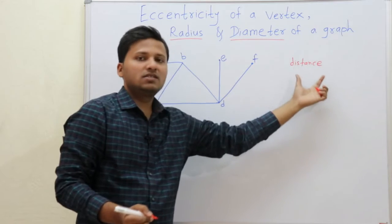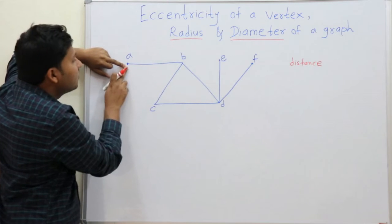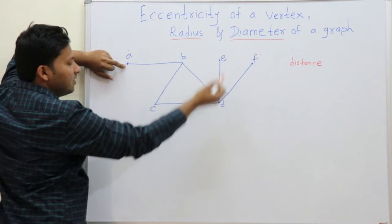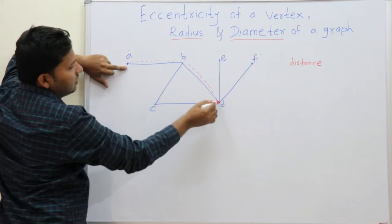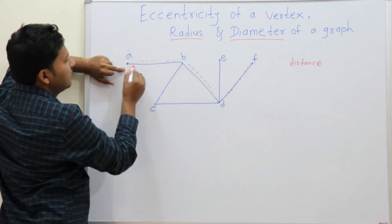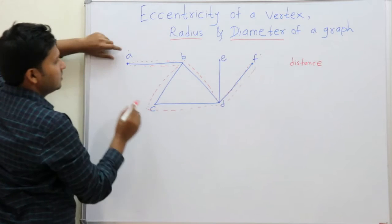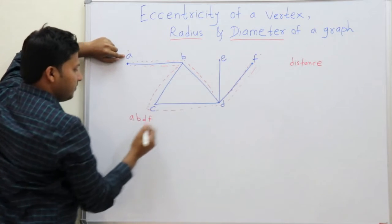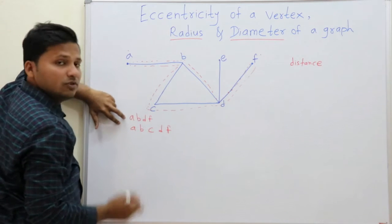What do we mean by distance? Suppose we want to find out the distance between vertex A and vertex F. How many paths are there to reach vertex F? One path is A-B-D-F, and another path is A-B-C-D-F. So these are the two paths.